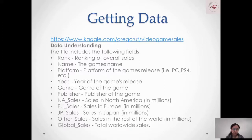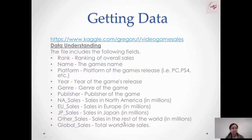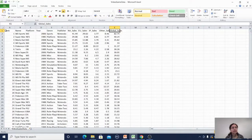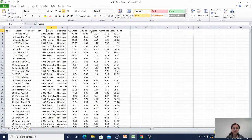For this study, I will take video game sales data from Kaggle. It has columns like rank, game name, platform, year of release, genre, publisher, North America sales, Europe sales, Japan sales, other region sales, and global sales. Let us move to the Excel data directly.